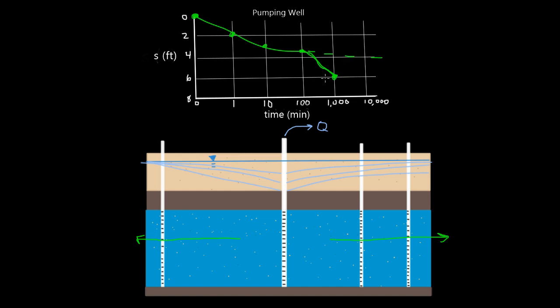If we see this drastically increased drawdown at some point in our test, that means we've reached out into the aquifer at some point where we've hit a boundary, right? We've hit a boundary, and what we call an impermeable boundary, where water is no longer coming through at the rate it was before.